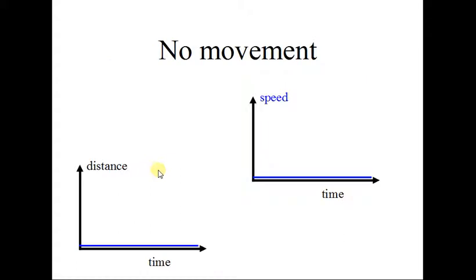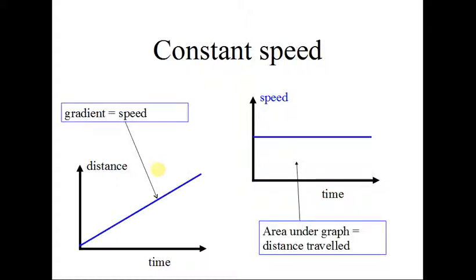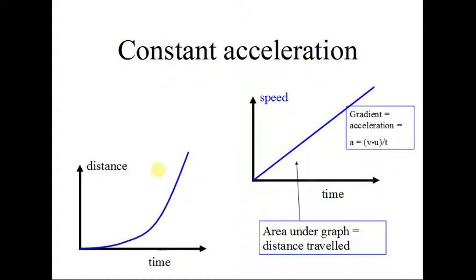So let's have distance time graphs and velocity time graphs side by side. When there's no movement, I think that's pretty straightforward. Constant speed, however, is slightly different. A constant speed or uniform speed on a distance time graph is a graph showing a positive correlation. It's a straight line. On a velocity time graph, it is a straight line but horizontal. And the area under the graph will give you the distance traveled. Constant acceleration, you get the flex, the curve, on a distance time graph. But on a velocity time graph, it is just a straight line with uniform gradient. The area under the graph is the distance traveled.